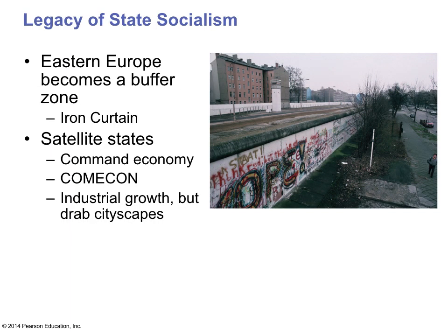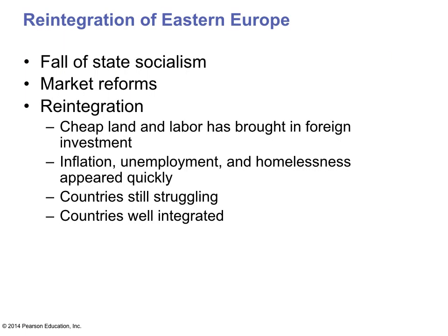With the advancement of communism in Eastern Europe and Russia, you began to see a separation of those two areas — the famous Iron Curtain, which separated the east from the west. The communists practiced the command economy, an economy controlled by the state. Industrial growth was very slow and cities became very drab. Communism eventually collapsed in the 1990s, and you began to see free market reforms coming in, but that's been a slow process trying to attract foreign investment. Countries had to deal with inflation, unemployment, homelessness, and many are still struggling today.